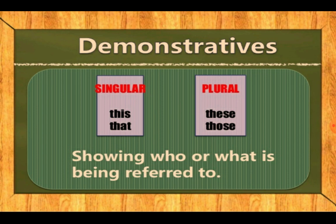Next is demonstrative. We have two types: singular and plural. If the noun is singular, 'this' and 'that' are used; if the noun is plural, 'those' and 'these' are used. Demonstrative determiners show who or what is being referred to — which thing or person the noun is pointing to.